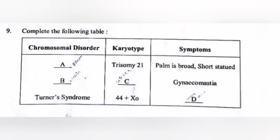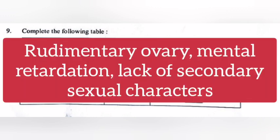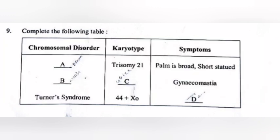Question 9: Complete the following table. Answer — A: Down syndrome; B: Klinefelter's syndrome; C: 47 autosomes plus XXY; D: rudimentary ovary, mental retardation, lack of secondary sexual characters.